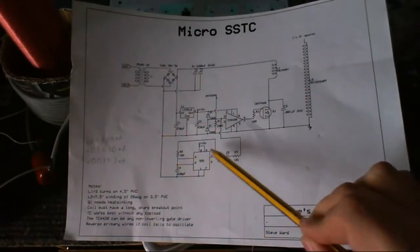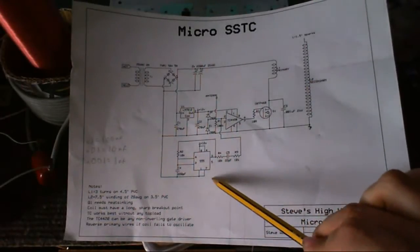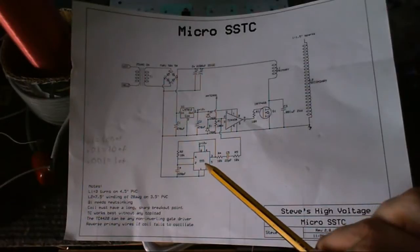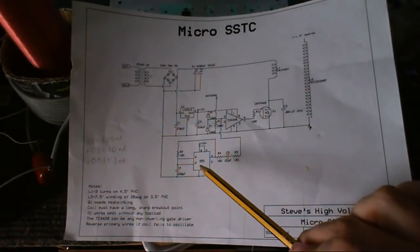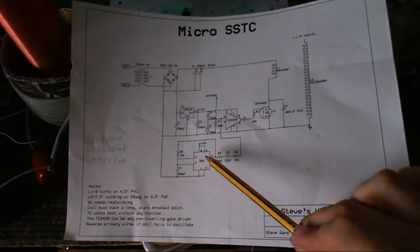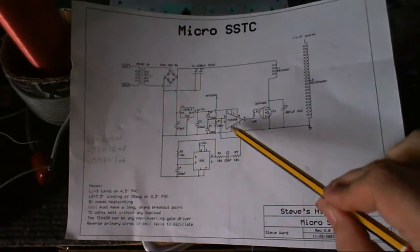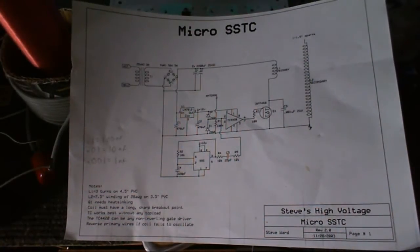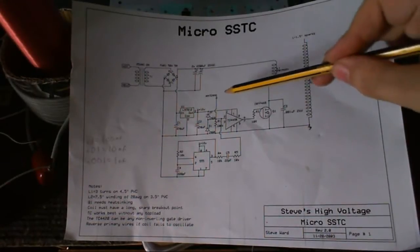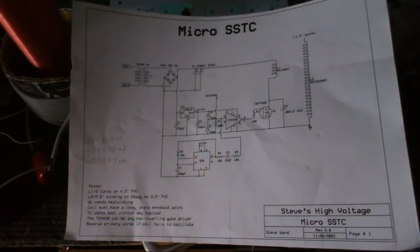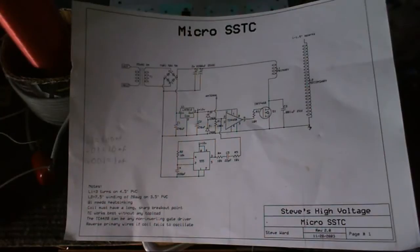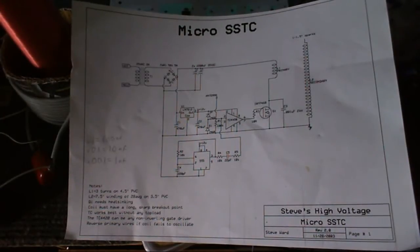Now, I'm not sure what this 555 timer actually does. At first, I thought that was some kind of interrupter, but I don't think it is now. What I think that does is basically starts the oscillation going, and then the feedback from the antenna takes over, and it oscillates at whatever the self-resonant frequency of the secondary is.